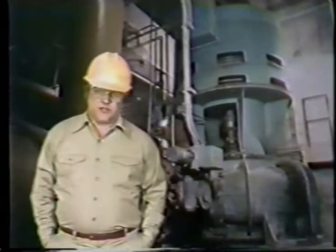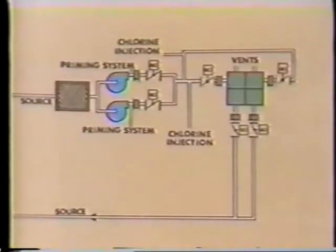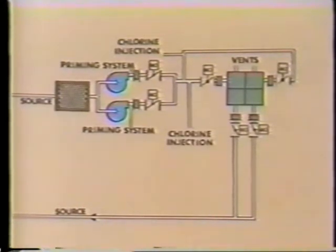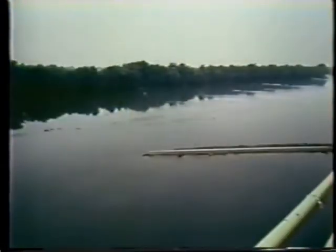Let's take a look at circulating water systems and discuss their components. This simplified drawing represents a typical circulating water system. This type of system is often referred to as a once-through system because water is returned to its source after flowing through the condenser once. This system is often used where the water source is large, such as a river, lake, or ocean.